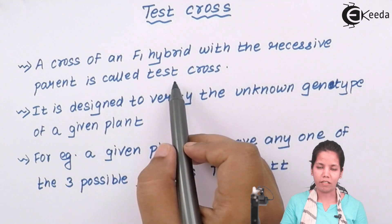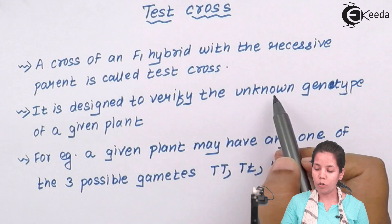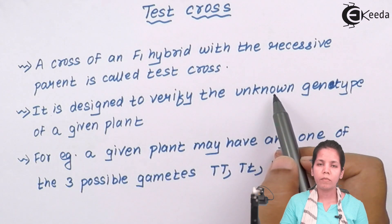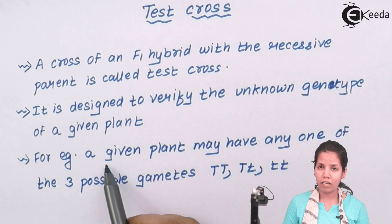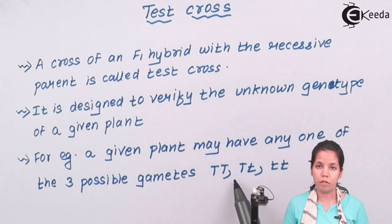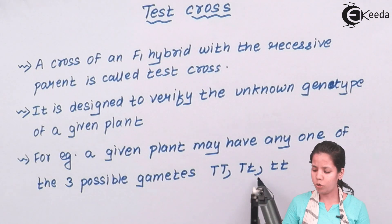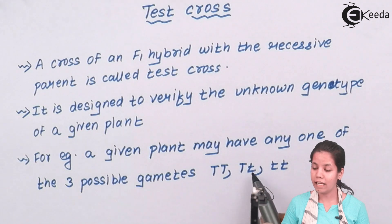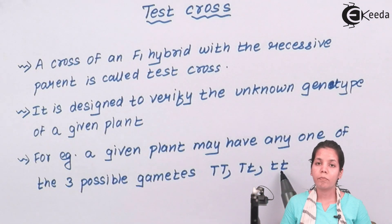Test cross was designed to verify the unknown genotypes — those which were not confirmed and Mendel wanted to check. For example, a given Pisum sativum plant can have any of these possible combinations: it could be dominant, that is capital T capital T; it could be heterozygous, that is capital T and small t; or it could be homozygous recessive, that is small t and small t. So Mendel did the test cross just to find the genotype.